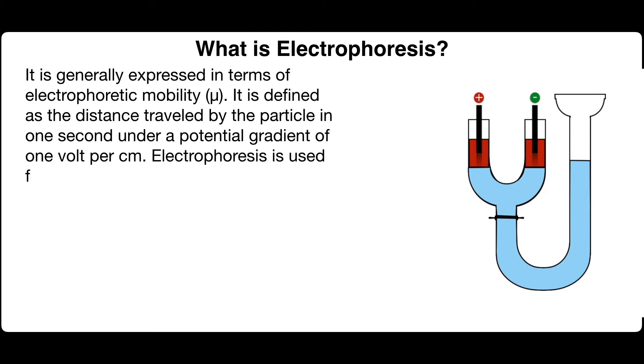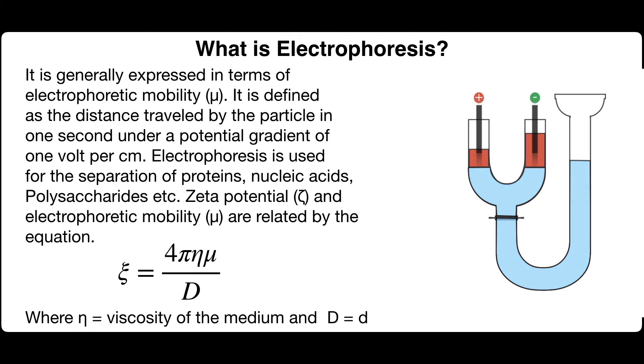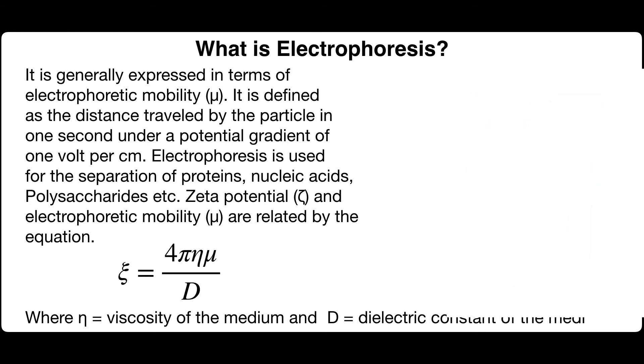Electrophoresis is used for the separation of proteins, nucleic acids, polysaccharides, etc. Zeta potential and electrophoretic mobility are related by the equation zeta equals 4 pi eta mu by D where eta is the viscosity of the medium and capital D is the dielectric constant of the medium.